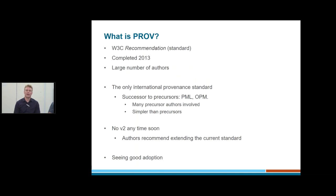What is PROV? PROV is a W3C recommendation. W3C is the World Wide Web Consortium — one of the governing bodies of internet standards. They issue documents called recommendations, not standards per se. PROV is their top level standard. Other standards by the W3C include HTML. PROV itself was completed in 2013 and formalized by the end of that year, so it's only a couple of years old. A large number of authors were involved in PROV.